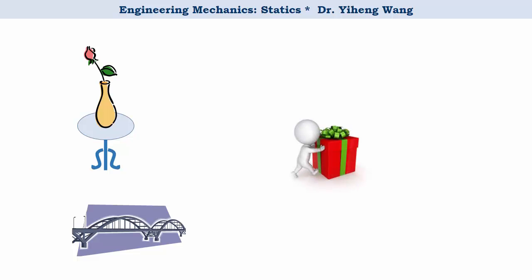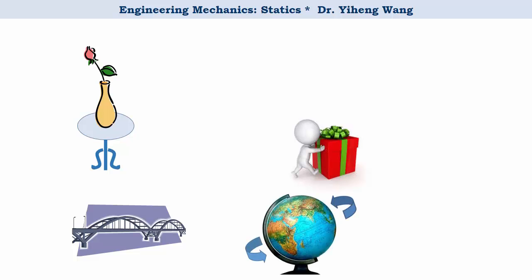Force can make things move. In this case, we can push an object to move translationally, in other words along a line, or we can rotate an object. We are all familiar with the gravitational force. In this example, the apple is falling because of its own weight, which is the gravitational force exerted by the earth.